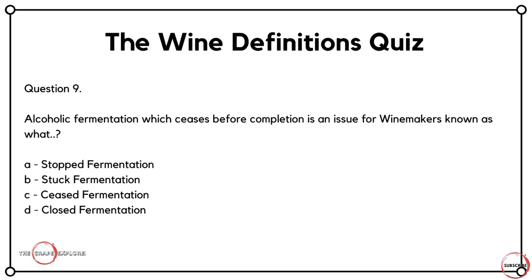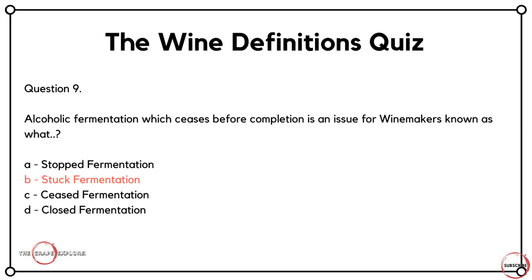Question nine is a problem for winemakers. Alcoholic fermentation which ceases before completion is an issue for winemakers known as what? Is it A, stopped fermentation? Is it B, stuck fermentation? Is it C, ceased fermentation? Or is it D, closed fermentation? The actual answer, and it really is a problem for winemakers, is stuck fermentation — that's answer B.